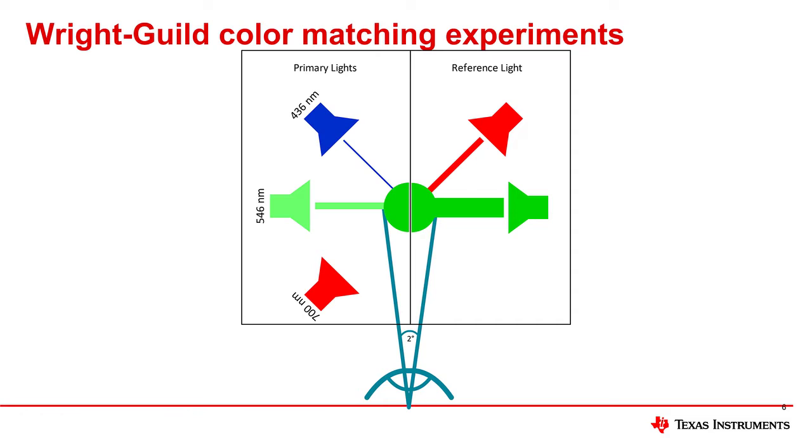As the wavelength of the reference light is swept across the visible spectrum, functions can be created for each of the red, green, and blue primaries, and the primary sources that were added to the reference side are represented as negative values.